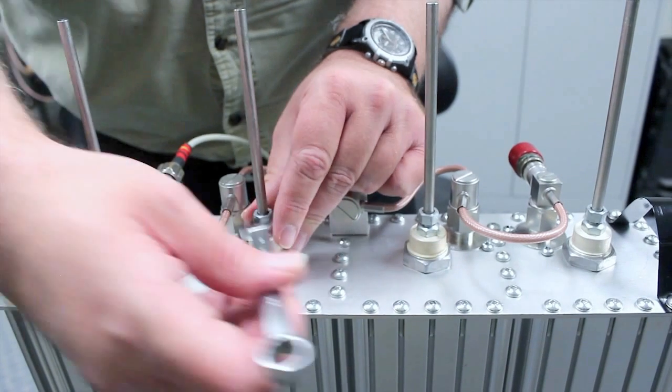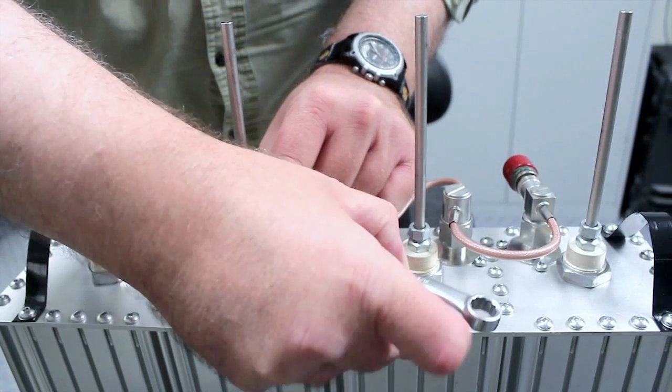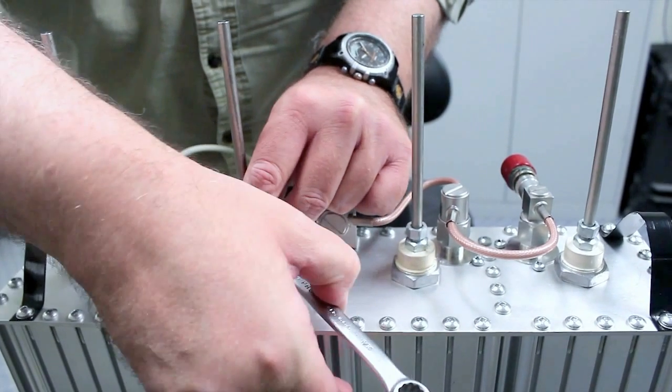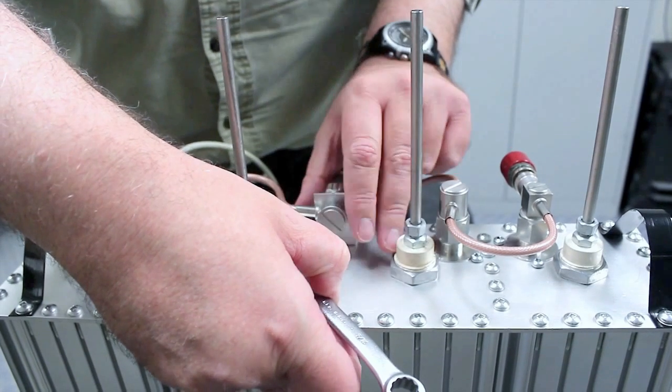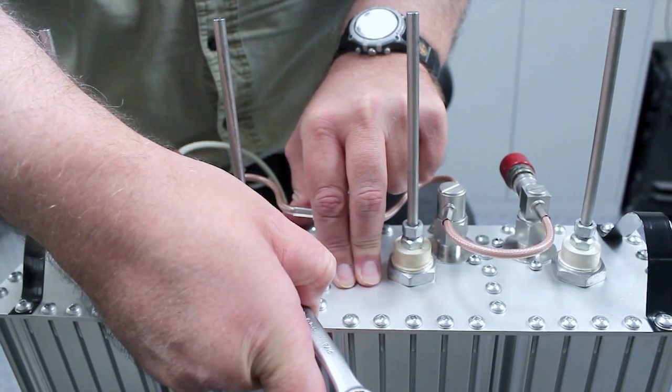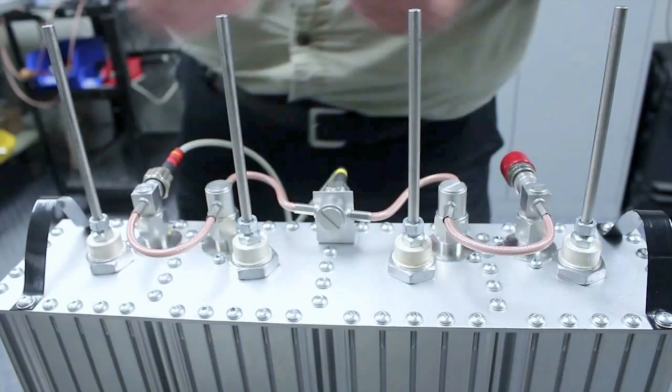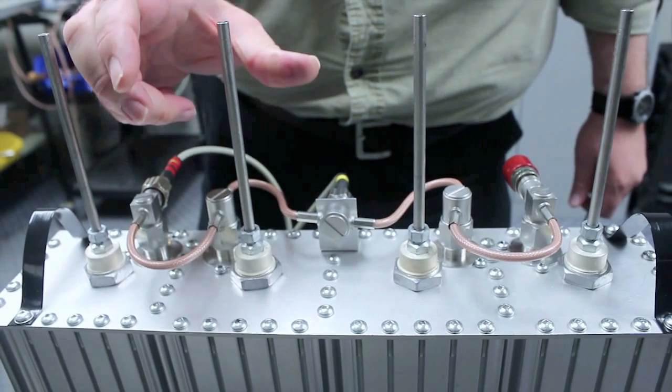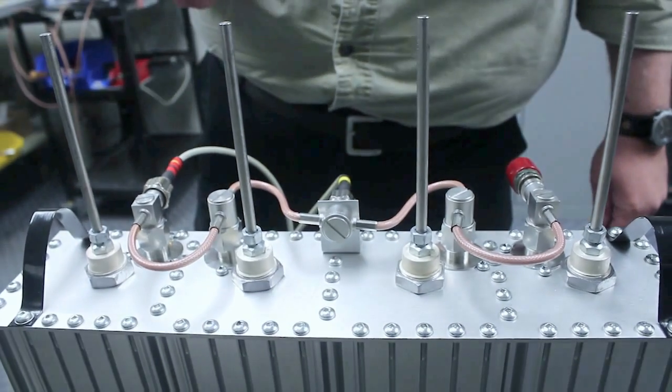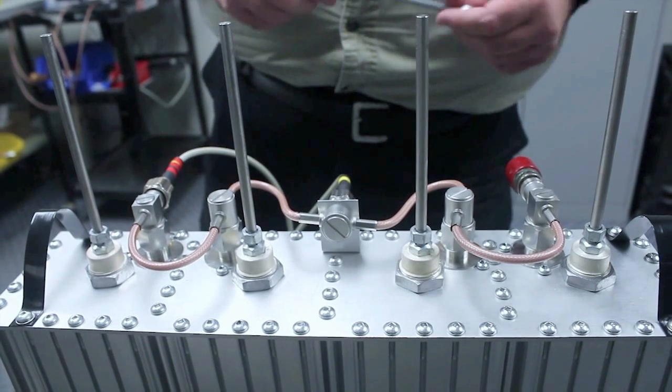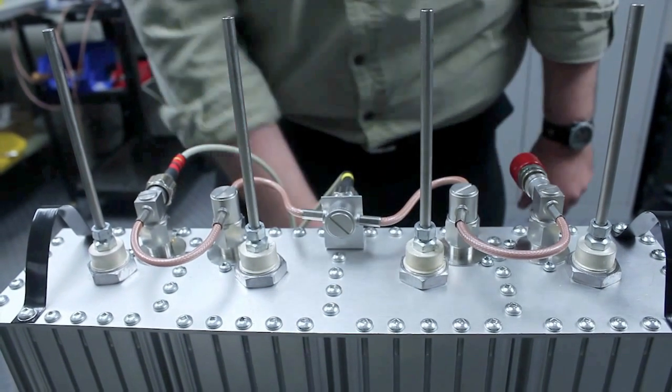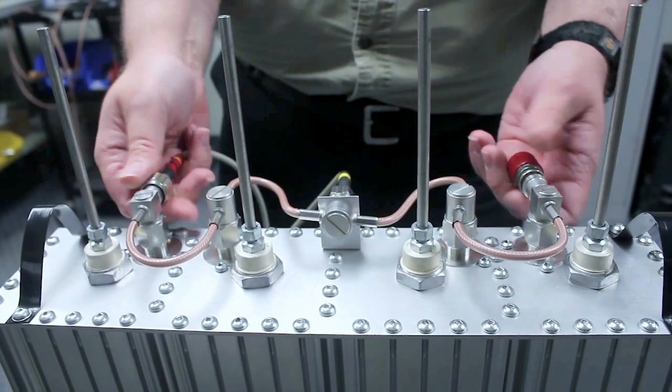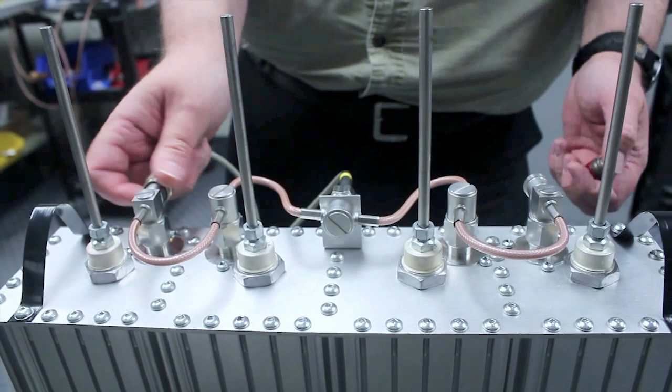Again. Start to feel significant resistance. Just a touch more. Back to where it was. So that's tight. We swap the cable back to the low pass section.